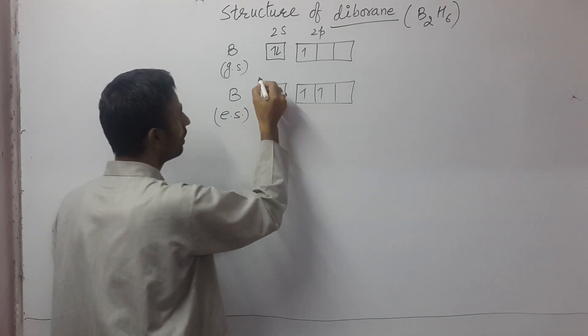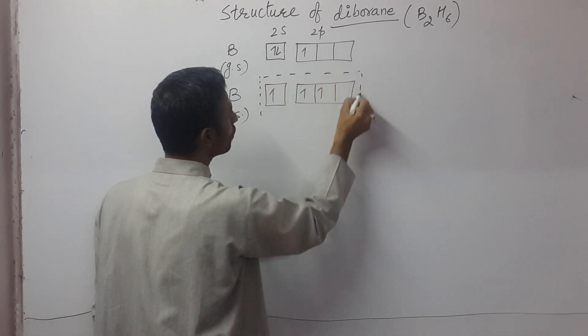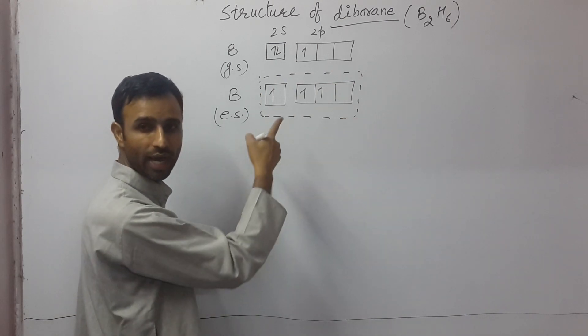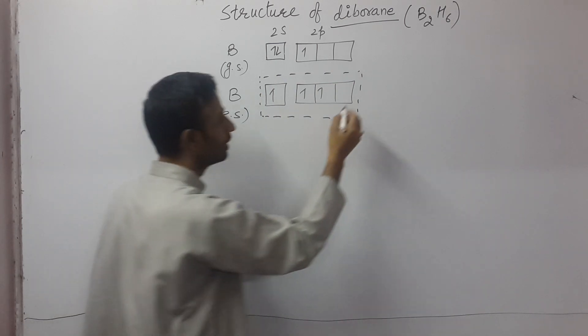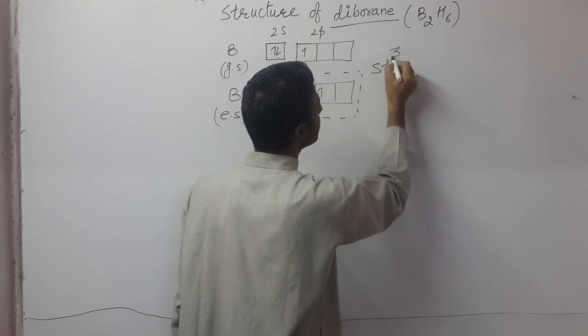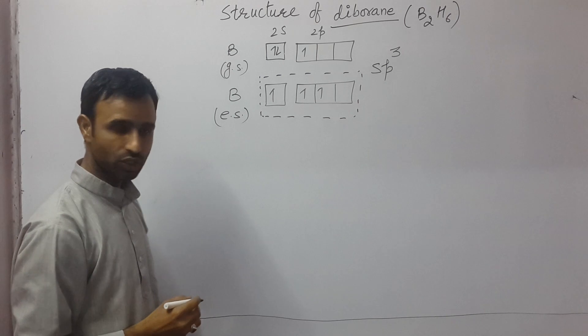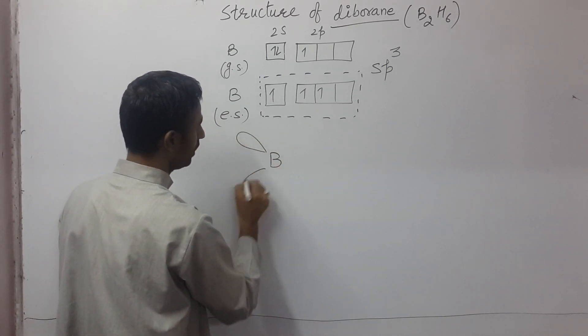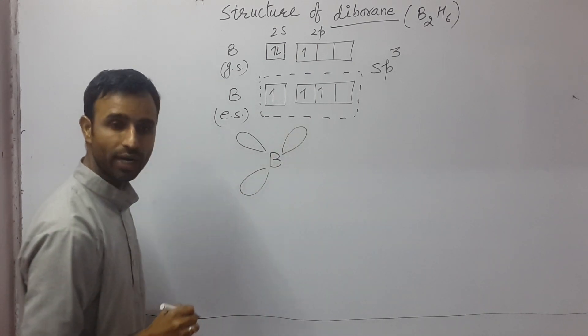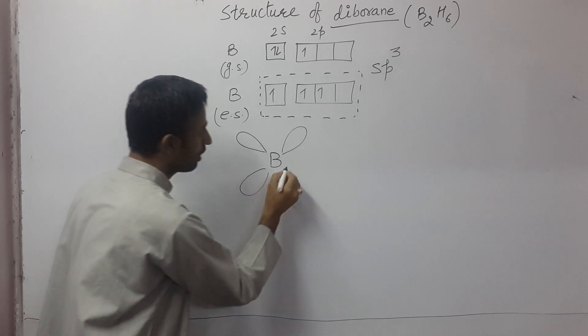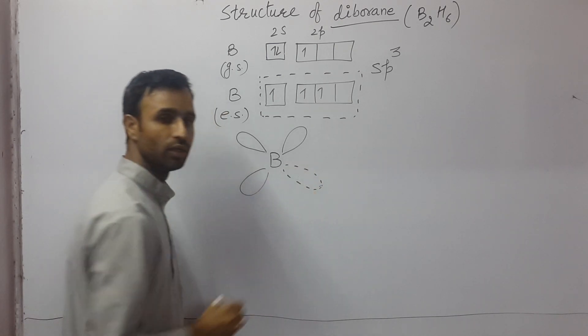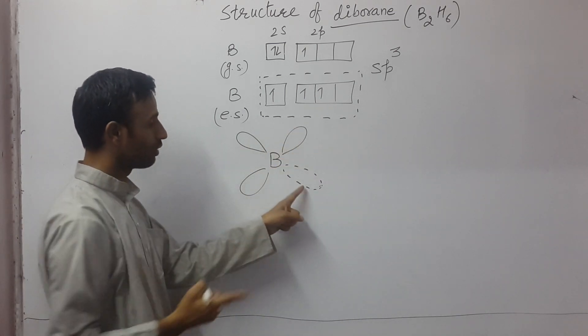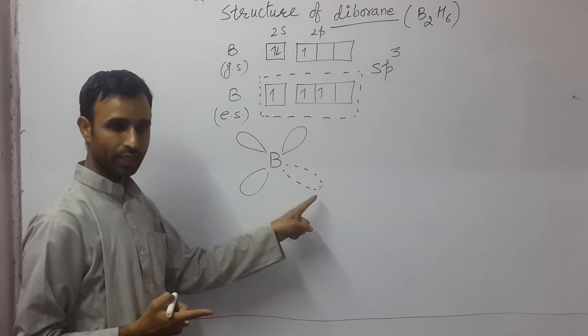And the structure is, each boron involves all four orbitals: one 2s and three 2p. That means each boron is sp3 hybridized. And boron has three orbitals with one unpaired electron and one orbital is vacant.